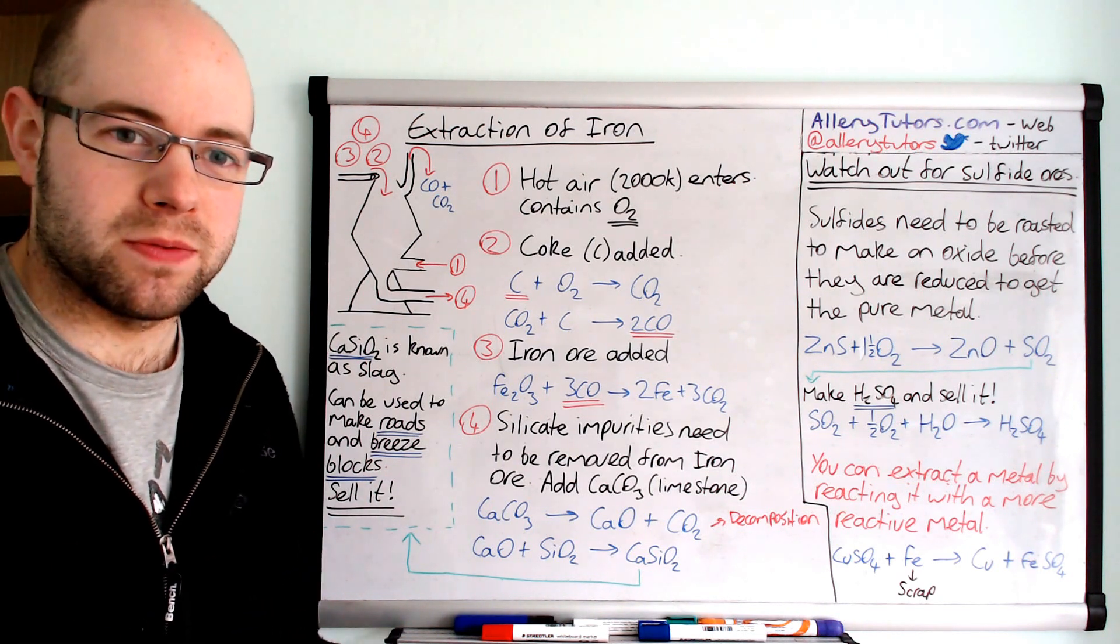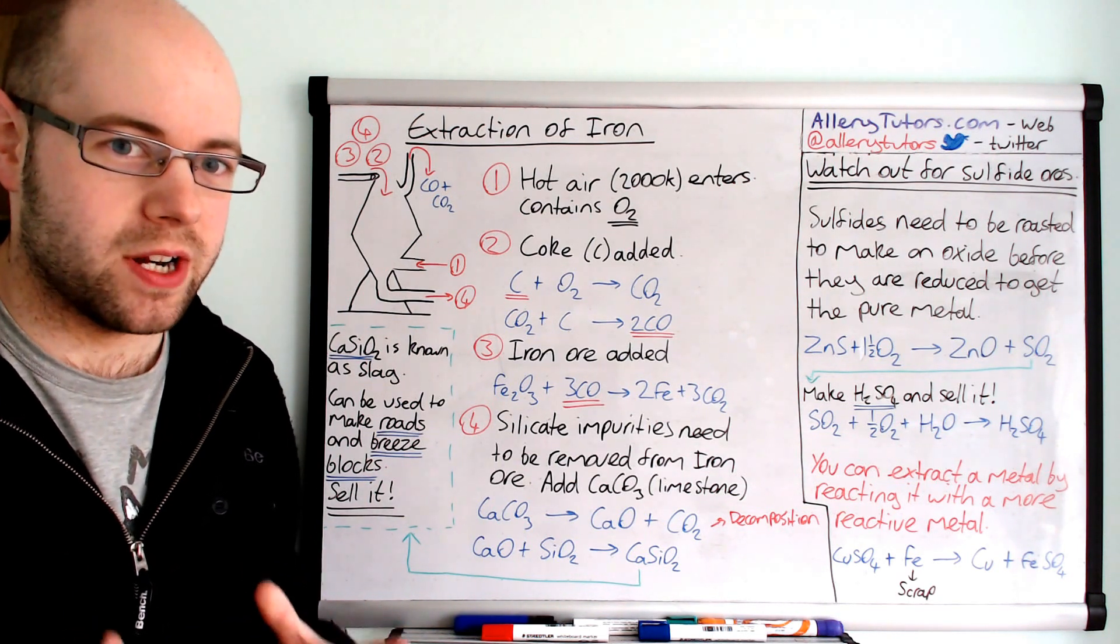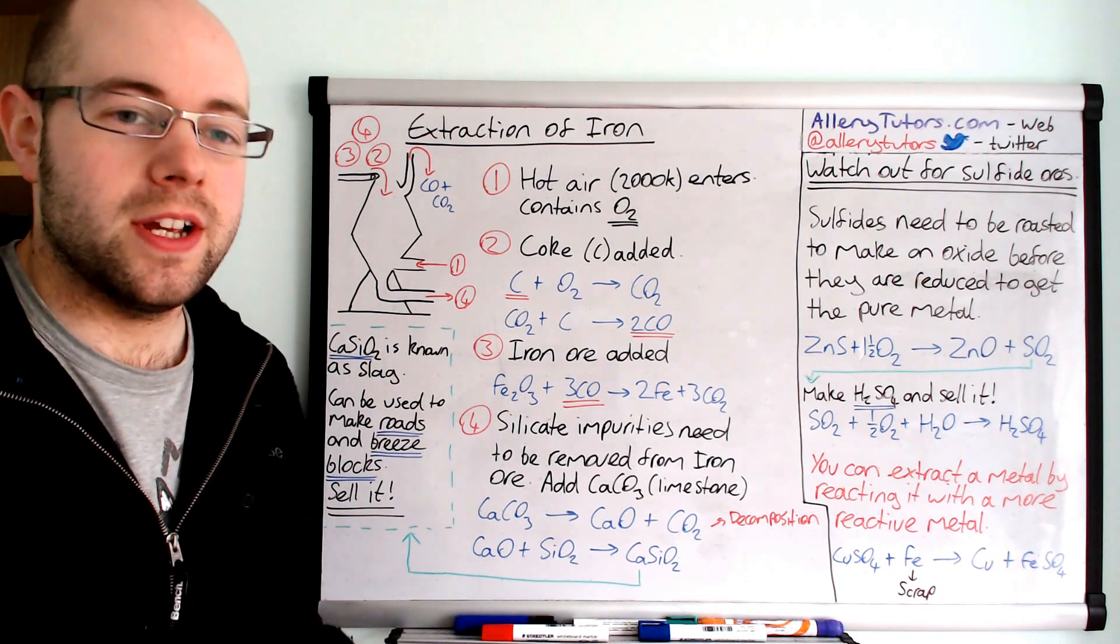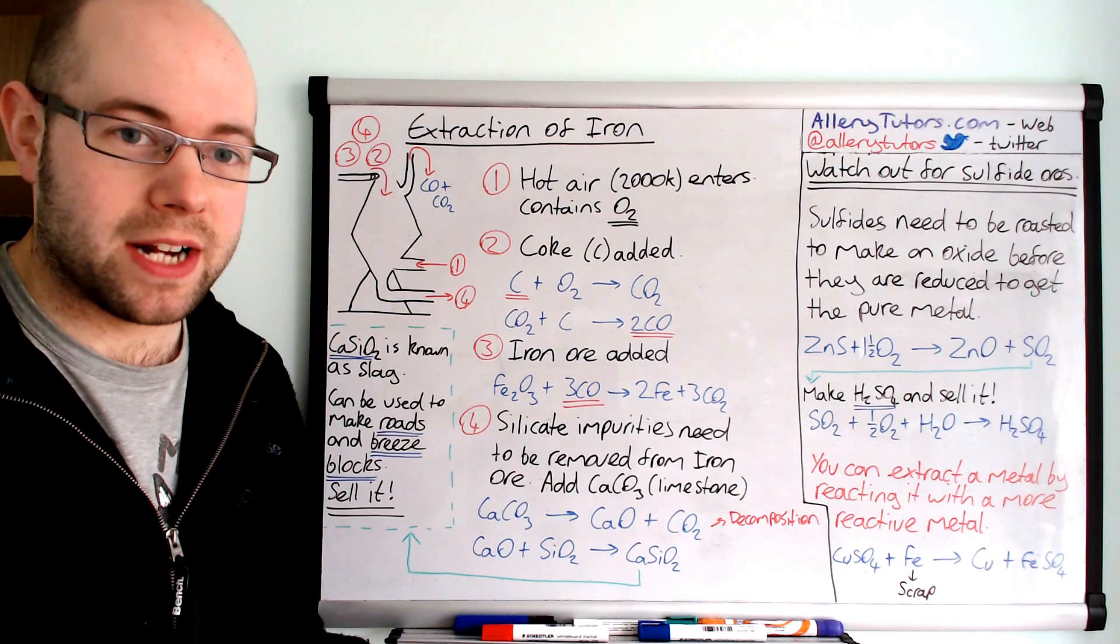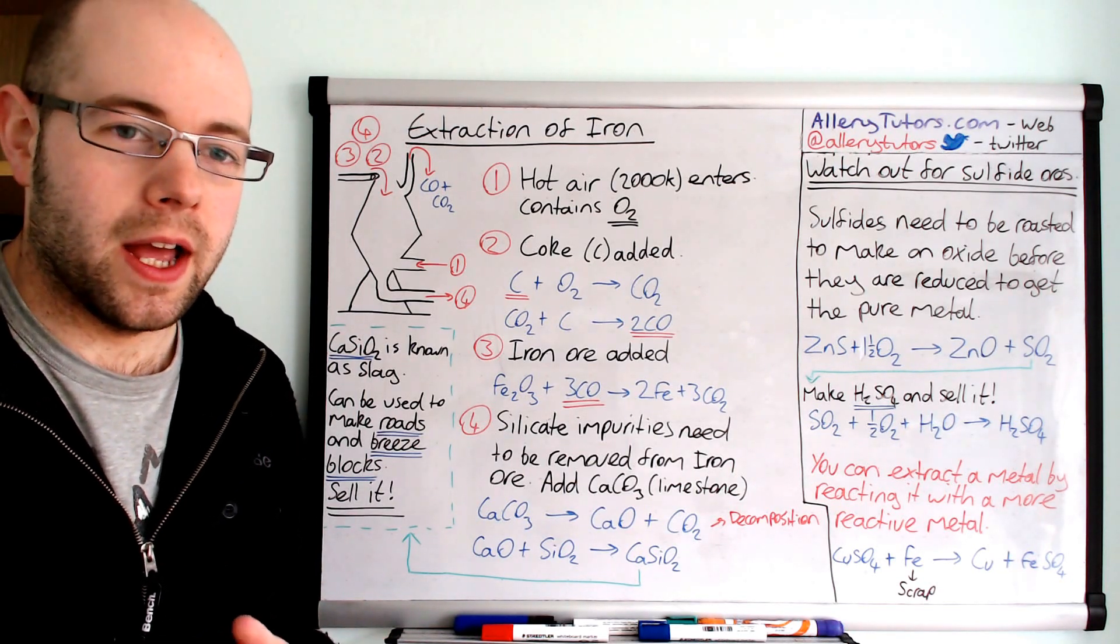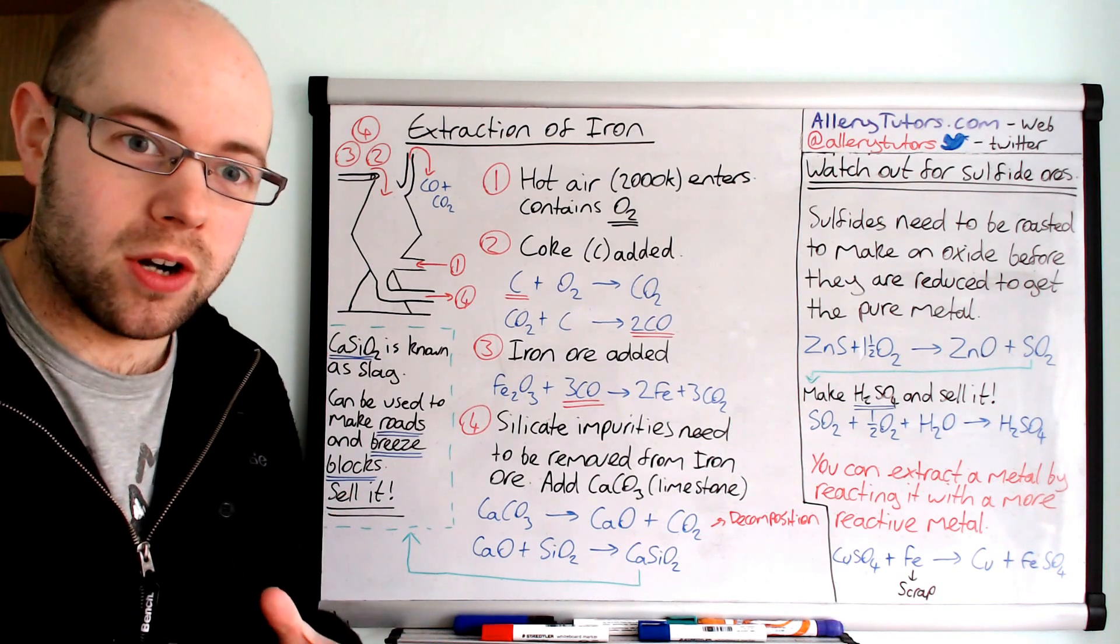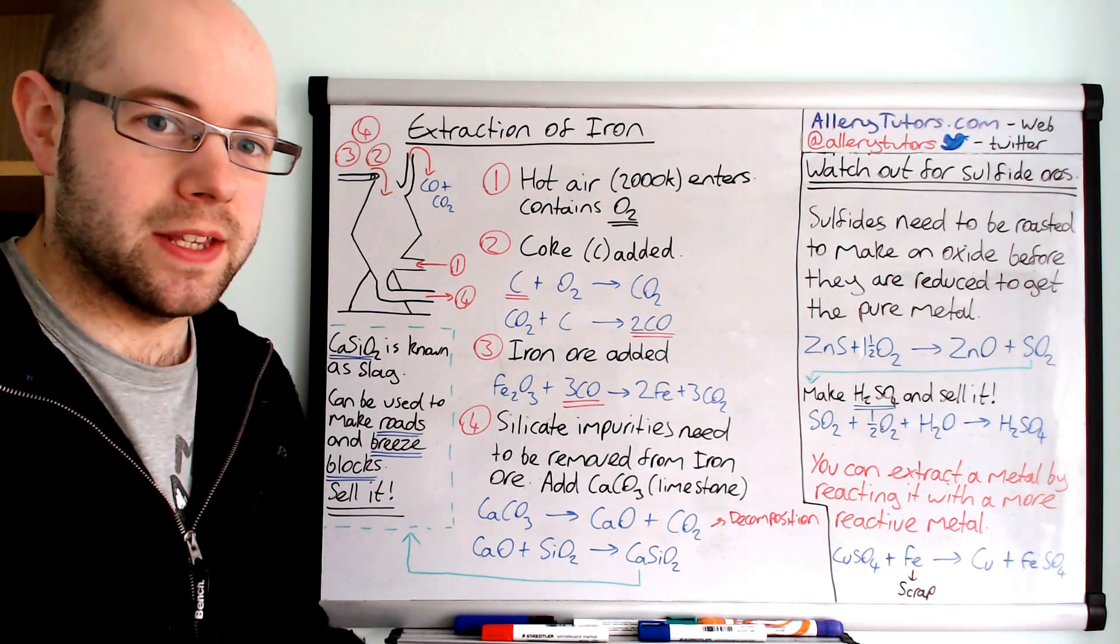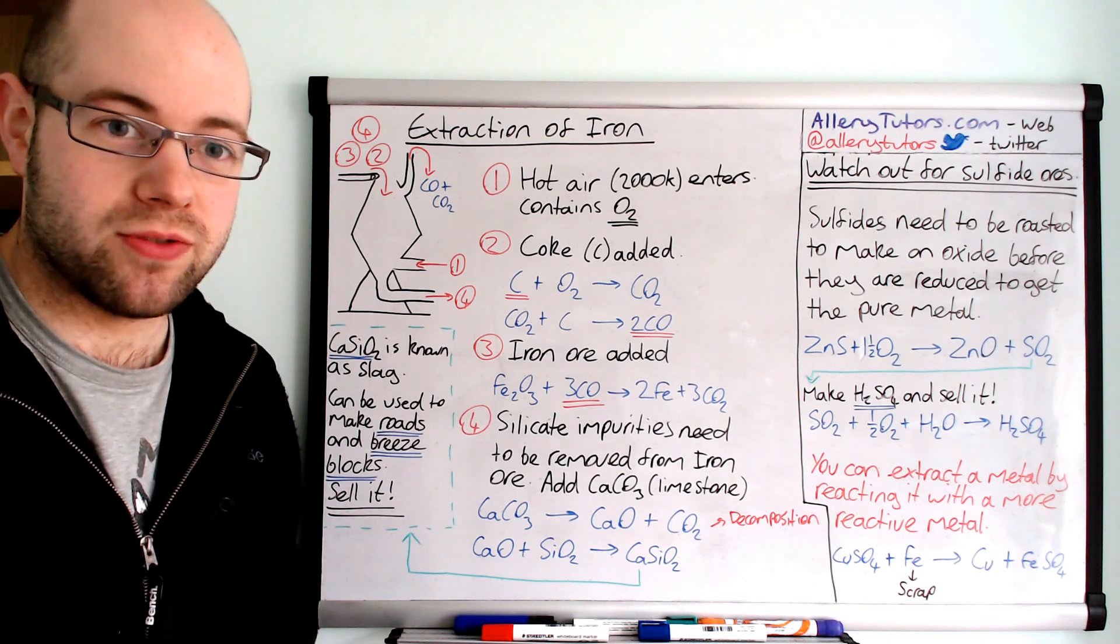So we use something called a blast furnace which is basically just a furnace that's really hot and we use a reducing agent to actually extract the iron from its ore. Now ores are effectively rocks that have a sufficient amount of the metal in there for it to be economically viable to extract.